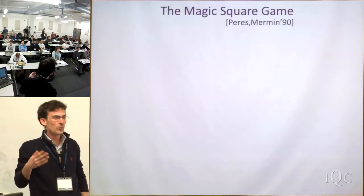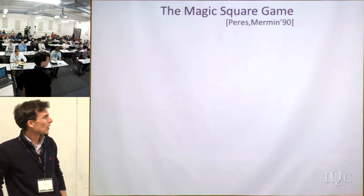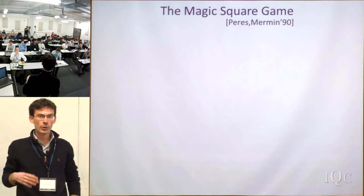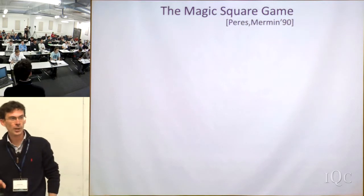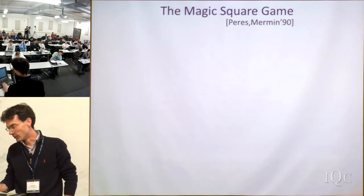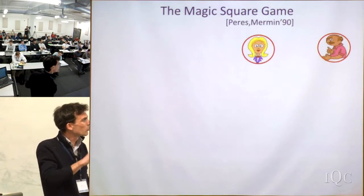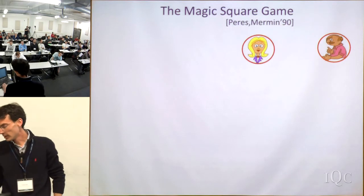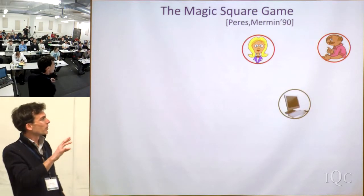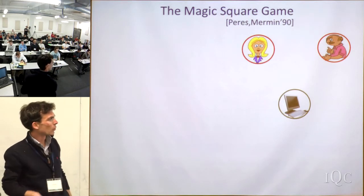Let me start with a little motivating example. I'm going to present this as a game. It was introduced by Perez and Mermin in the 90s, and they were really motivated by the study of Bell inequalities and trying to find simpler variants of the Kochen-Specker theorem. As a game, it goes like this: you have two players, Alice and Bob. They're cooperating, trying to win this game. The game is arbitrated by a referee.